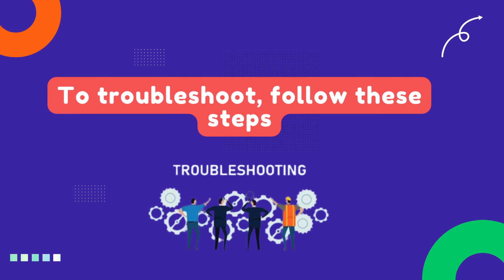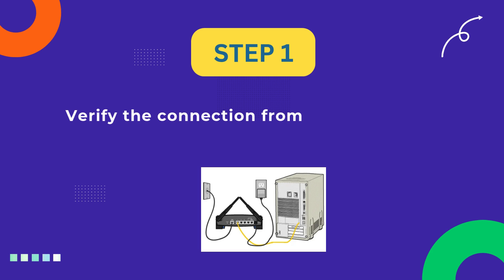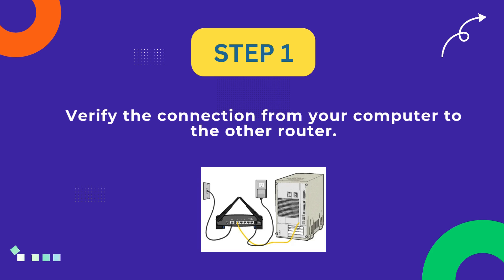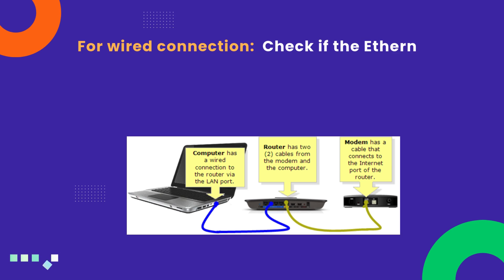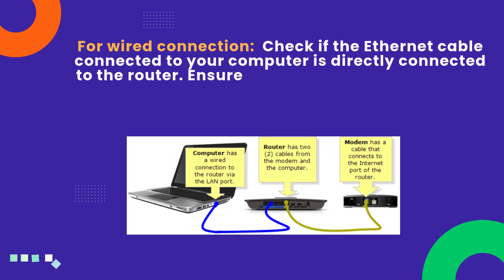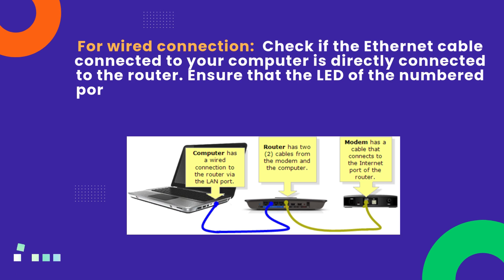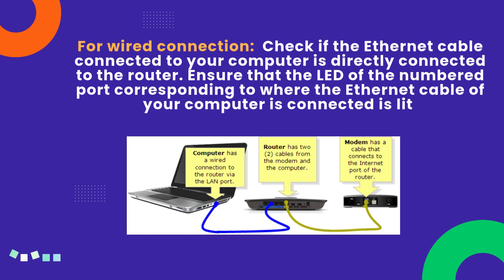To troubleshoot, follow these steps. Step 1: Verify the connection from your computer to the router. For wired connection, check if the Ethernet cable connected to your computer is directly connected to the router. Ensure that the LED of the numbered port corresponding to where the Ethernet cable of your computer is connected is lit.